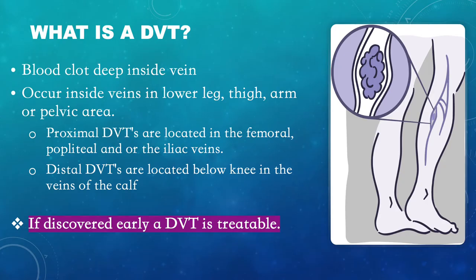A DVT is a blood clot found deep inside the vein. It occurs in veins in the lower legs, thighs, arms, or pelvic area. There can be proximal DVTs located in the femoral, popliteal, and/or iliac veins, or distal DVTs located below the knee in the veins of the calf. If discovered early, a DVT is treatable.